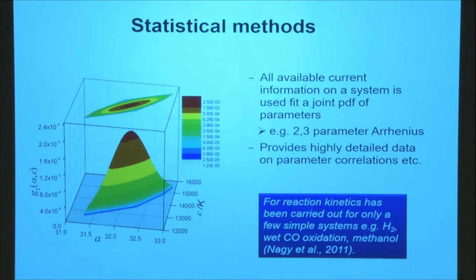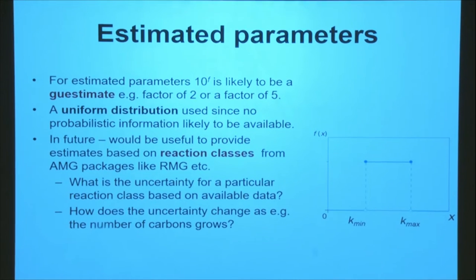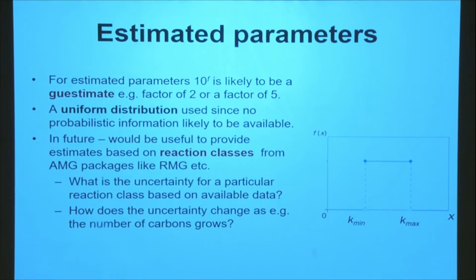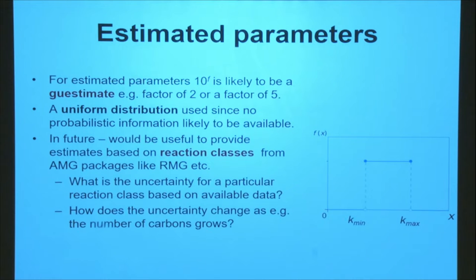If we've got nice probabilistic information, we can assume something like a log-normal distribution and might have the full joint PDF. In most of the things we've looked at, we don't really know what the overall probabilities are — we sort of have a feel for what the minimum and maximum values are, so we're just going to assume a uniform distribution across that range. We might say a factor of two or a factor of five. If anyone's involved in this kind of work, it would be really useful to have estimates based on reaction classes from the software we use to generate our models — what is the overall uncertainty for a particular reaction class, and how might that uncertainty change as the number of carbons grows — so that we get an automatic provision of uncertainty information when we generate a mechanism.